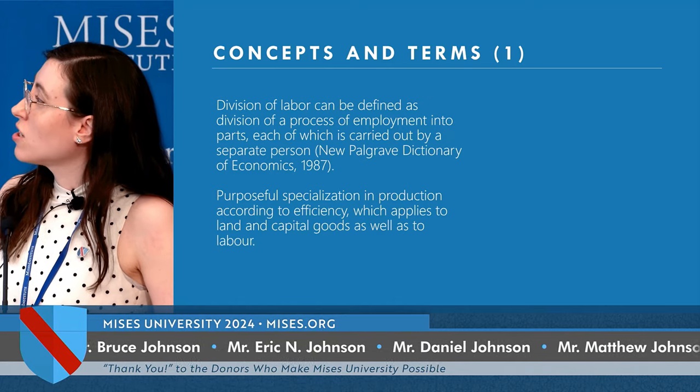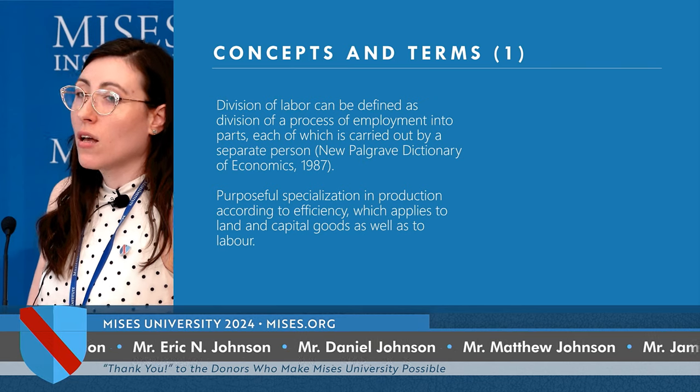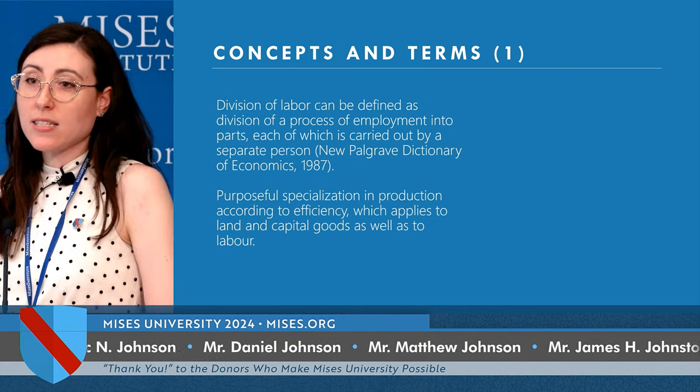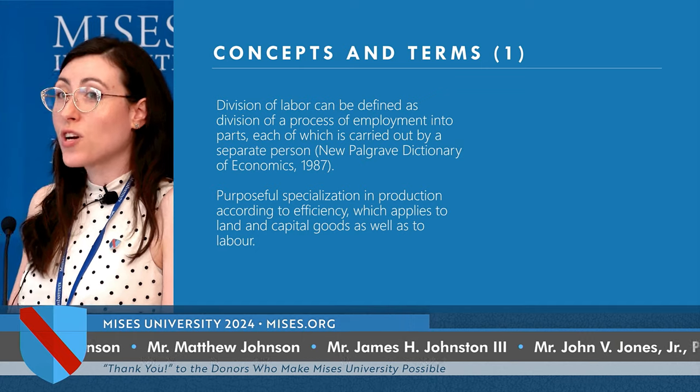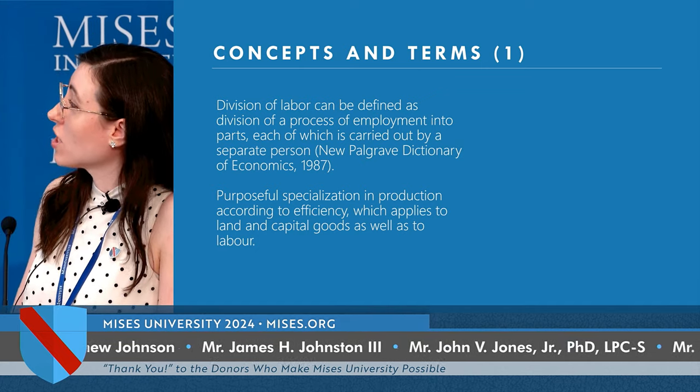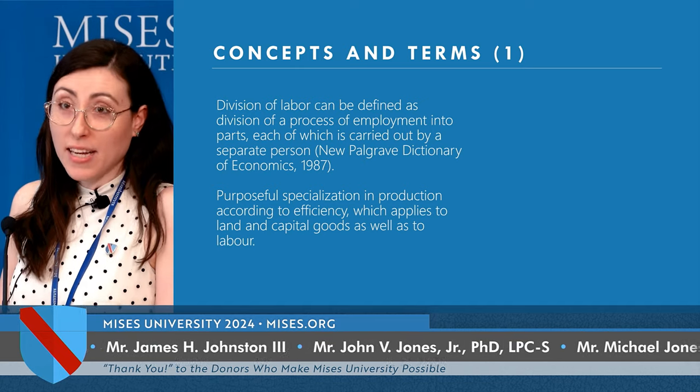So what is division of labor? A standard dictionary definition simply defines it as the division of a process of employment into parts, each carried out by a separate person. What an Austrian would call division of labor is purposeful specialization in production according to efficiency. This applies to individuals, and it applies to factors of production as well — to land, capital goods, and labor.